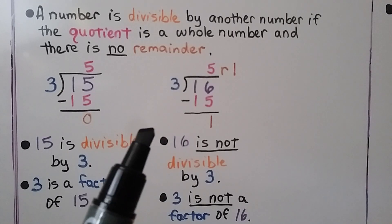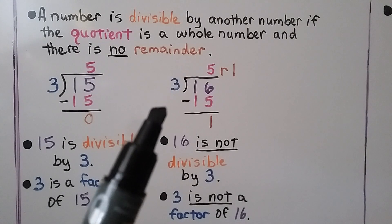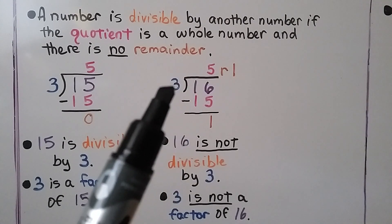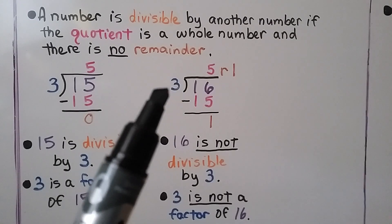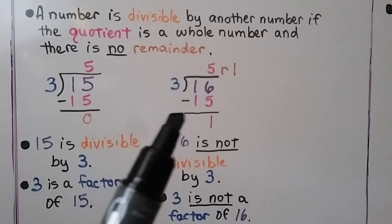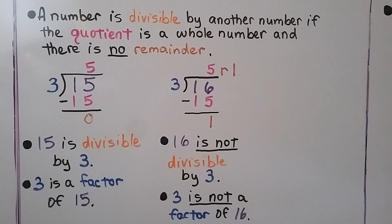Is 16 divisible by 3? Is 3 a factor of 16? We do 16 divided by 3 and ask how many times 3 can fit into 16. It fits in 5 times. 3 times 5 is 15; we subtract and get 1 for a remainder. Because we have 1 for a remainder, 16 is not divisible by 3, and 3 is not a factor of 16.